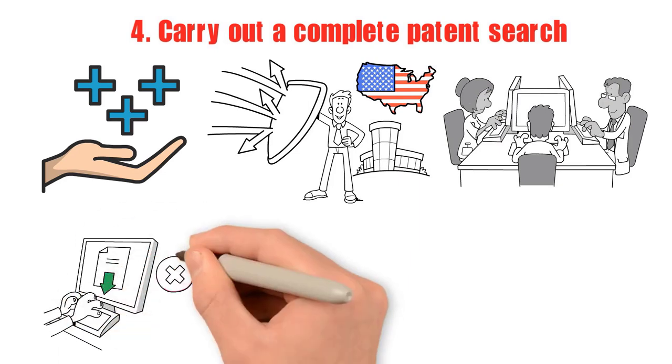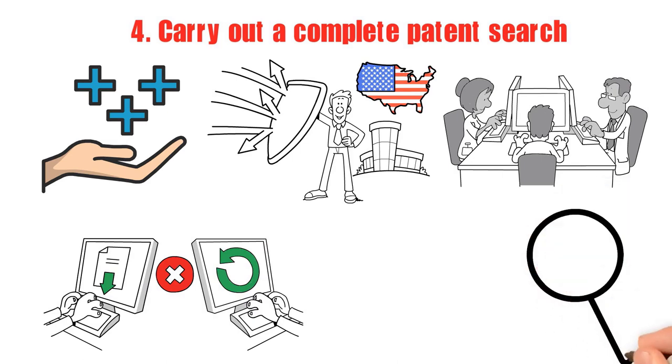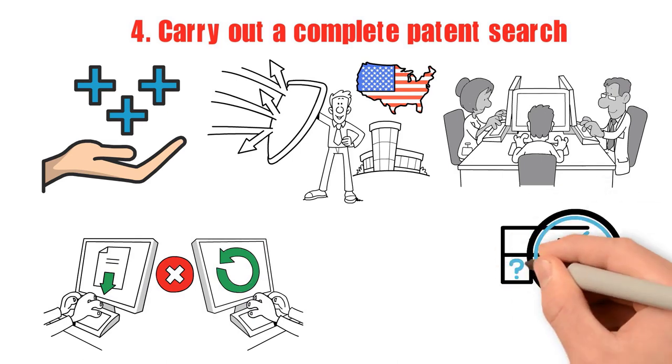You will undoubtedly come across similar inventions when you search. You must describe how your innovation differs from or advances upon these past advancements in your application.